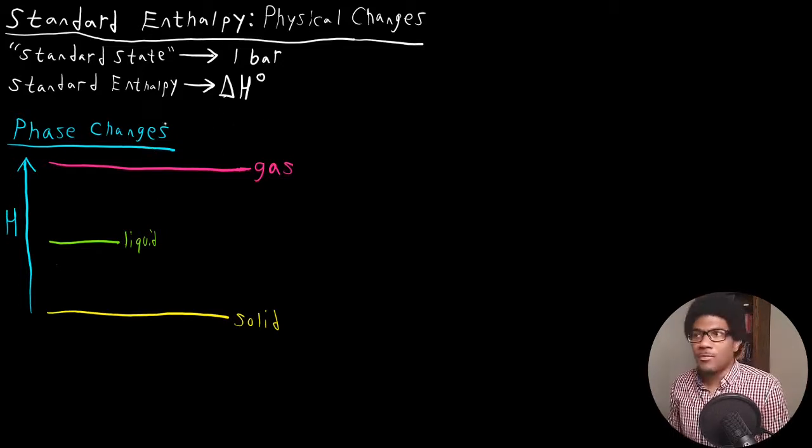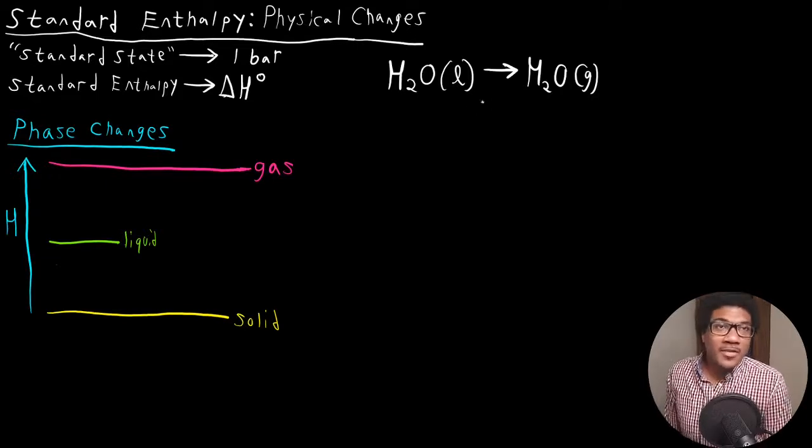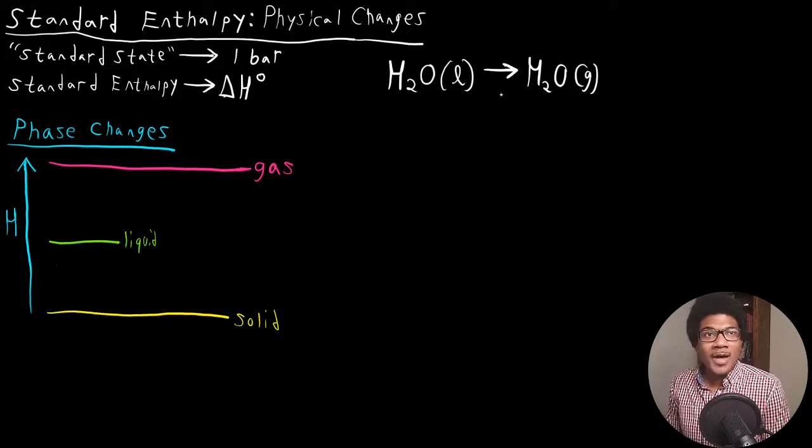Something like a phase change would be an example of a physical change. For example, if you have liquid water and you vaporize it into gaseous water, you create water vapor. Obviously, you're changing something about the system, but it doesn't change the chemical identity of that system. You're still dealing with water. It's the same molecule, but you've changed its phase.